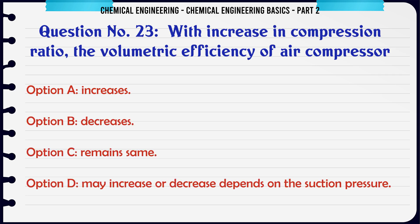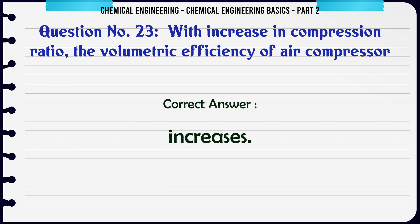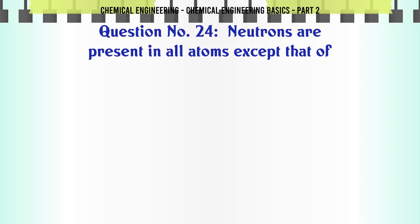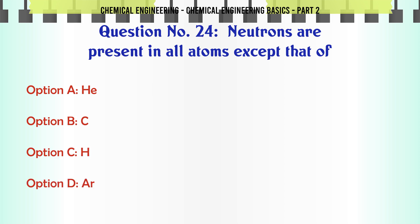With increase in compression ratio, the volumetric efficiency of an air compressor: a) increases, b) decreases, c) remains same, d) may increase or decrease depending on suction pressure. The correct answer is: increases.